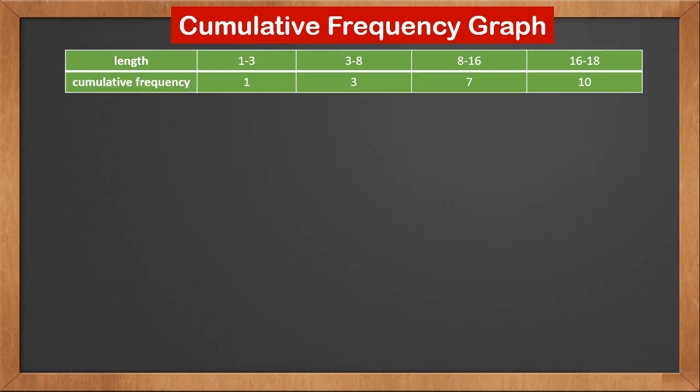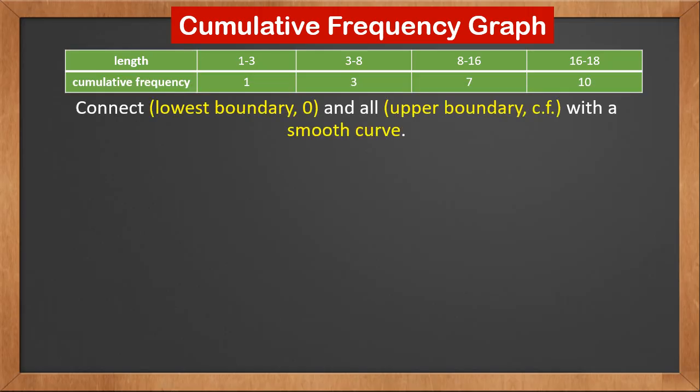With cumulative frequencies ready, we can draw the cumulative frequency graph now. We need to connect several points with a smooth curve. Those points are the lowest boundary, 0, and the upper boundary, cumulative frequency of each class. The lowest boundary is 1, so the first point is (1, 0).